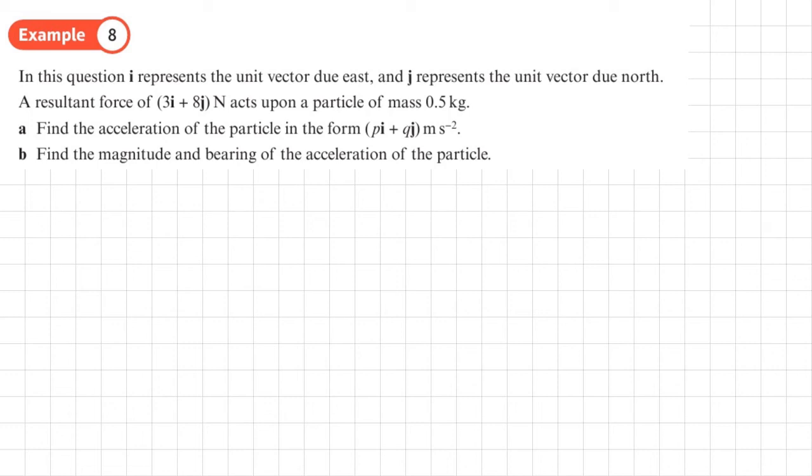Section 10.4, Motion in Two Dimensions, Example 8. In this question, i represents the unit vector due east, and j represents the unit vector due north. So we know they're going to begin like this is my i vector and this is my j vector.